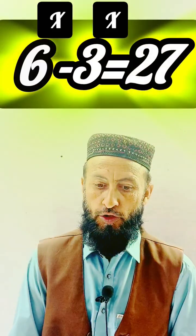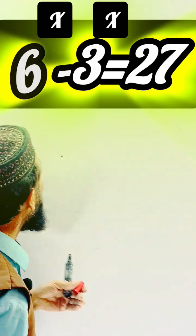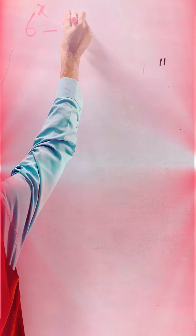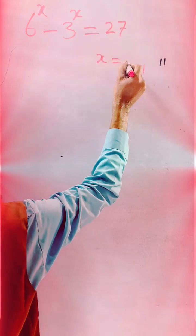India students, today we are going to discuss a new exponential equation, very interesting and logical question. So let's come, we start: 6^x - 3^x = 27. How can we find the value of x?